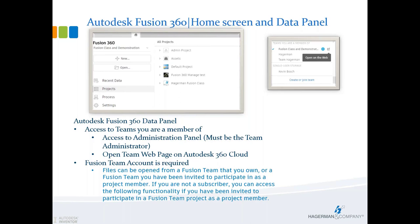The Autodesk Fusion 360 homepage, or data panel, whatever you want to call it, has changed over the last couple of months actually as they sent updates out for Fusion. We can now see two different panels on the left-hand side of the screen. Those are the team panel, where we can access teams that we're a member of — whether we've created that team or whether we've joined other teams. If we have created a team, we've got access to an administration panel. You can see the little blue gear in the top left picture that allows us to administer that team, invite members, remove members, change how they can access files.